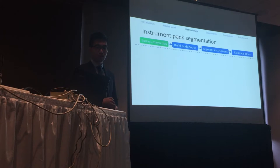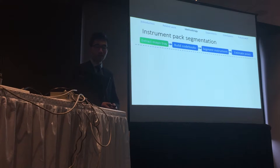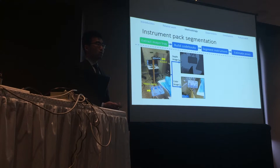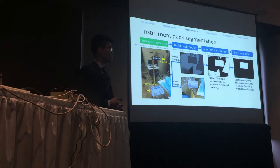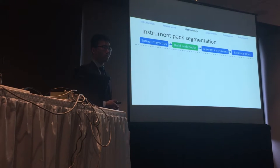Segmentation has four steps. The first step is to extract the mayo tray. We use a Kinect sensor placed on top that delivers a color image and a depth image. We apply adaptive thresholding on the depth image to get the foreground, and then do contour analysis to identify the mayo tray, which is most often a rectangular shape. That is the output of this step.